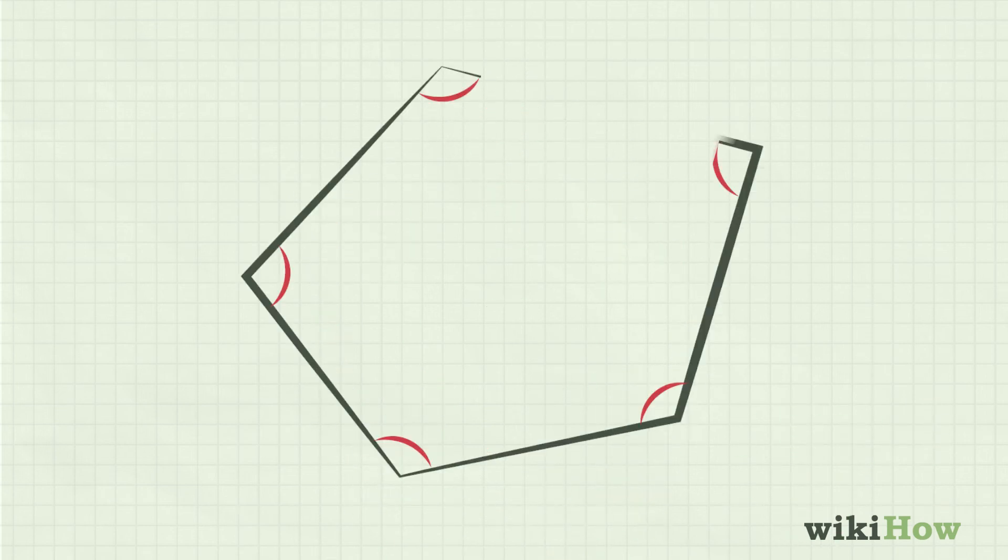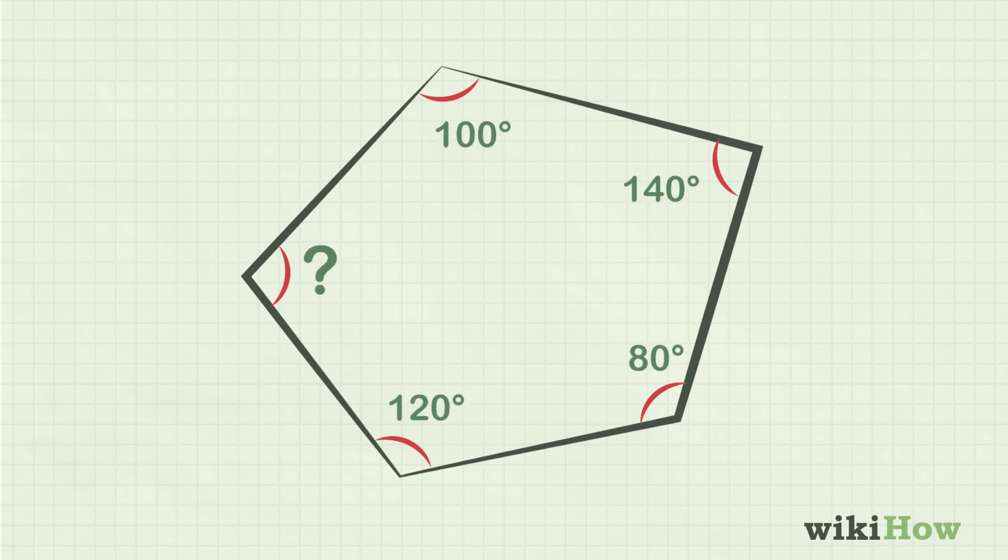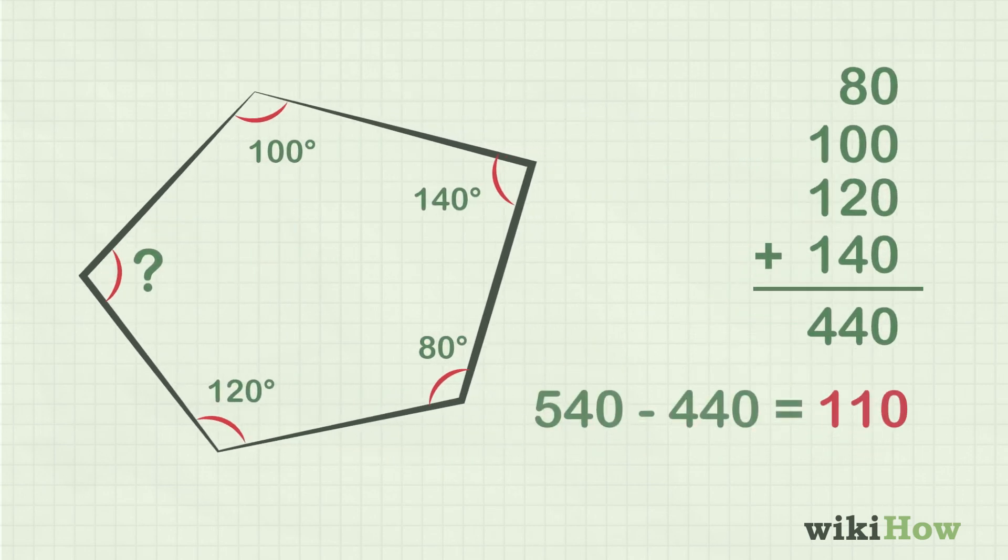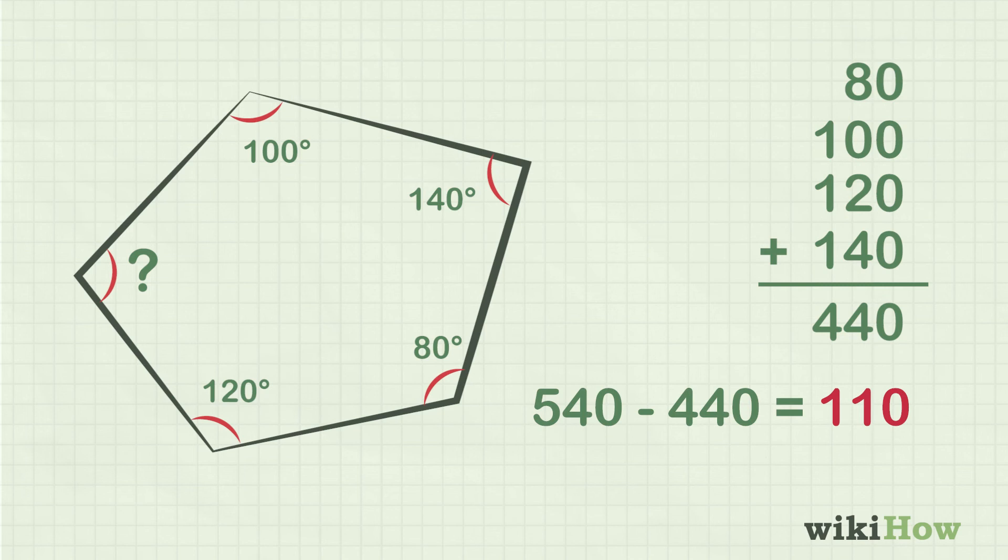If the polygon has irregular sides, your job is a little trickier. If you know all the angles in the polygon but one, you can add the known angles up and subtract the sum from the total number of degrees of all the interior angles. This will give you the number of degrees in the missing angle.